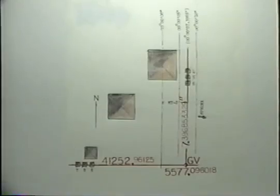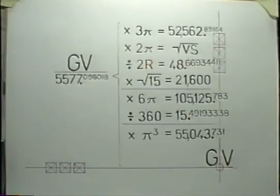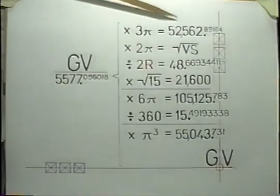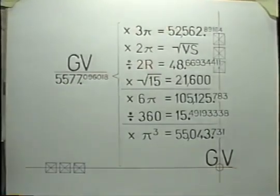Since Stonehenge explained the language, there's nothing holding us back, so let's go for it. Three pyramids present each of these invisible lines to vector GV. That's 3 pi in the language. Apply it and find the grid longitude of Stonehenge, 52562.89.